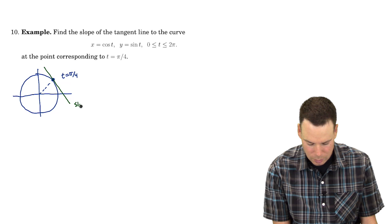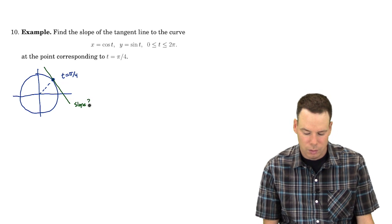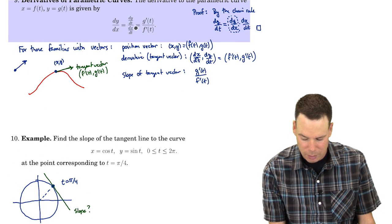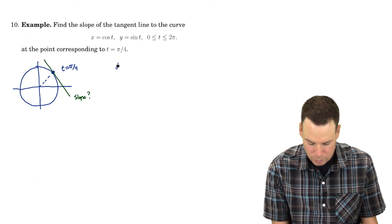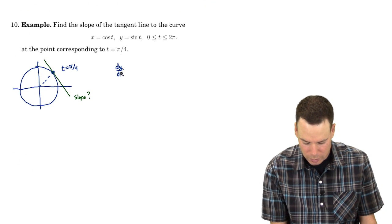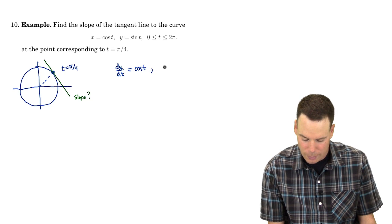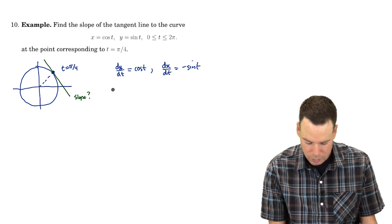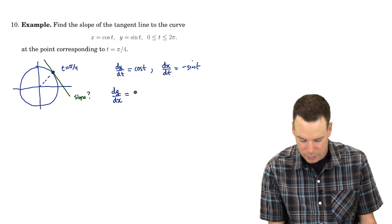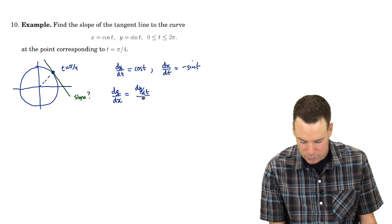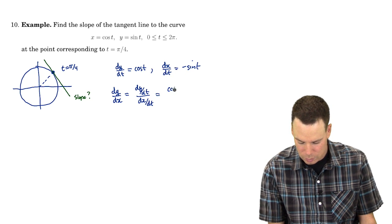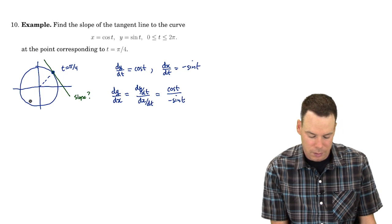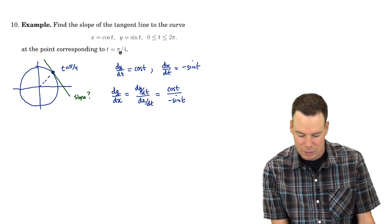Our tangent line is going to look like this, and what we're interested in is the slope — what is the slope of the tangent line? Our formula says: to find the slope, take the derivative of the y function and divide by the derivative of the x function. dy/dt equals the derivative of sine, which is cos of t. dx/dt is the derivative of cosine, which is negative sine of t. So dy/dx equals dy/dt divided by dx/dt, which is cos of t over negative sine of t. That's our derivative for any point on the parametrized curve.